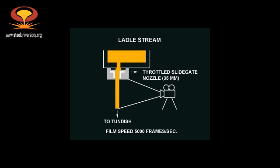This next sequence shows the nature of the stream coming from a slightly throttled slide gate valve. Because the nozzle is slightly throttled, this ladle stream is not a smooth stream — we can see that it is rough and ragged, and will entrain air into the tundish, resulting in the formation of massive defects.